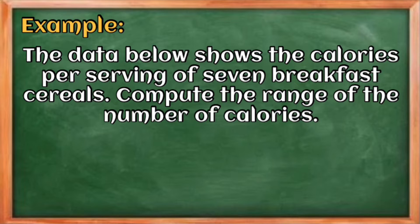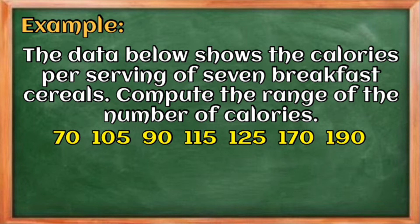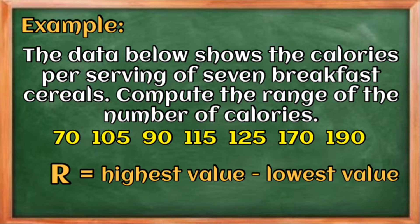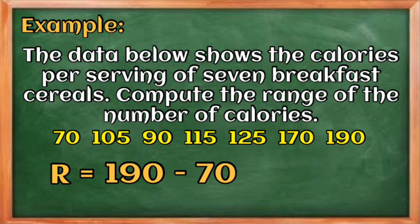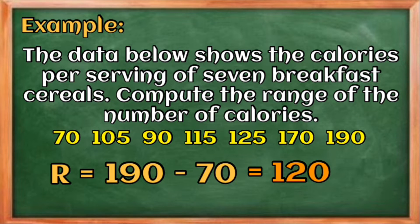Let us have this example: the data below shows the calories per serving of seven breakfast cereals — compute the range of the number of calories. We need to first identify the highest and lowest values. The highest value is 190 and the lowest value is 70. So the range is 190 minus 70, which equals 120. Therefore, our range is 120.